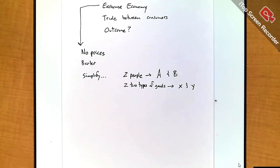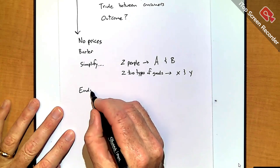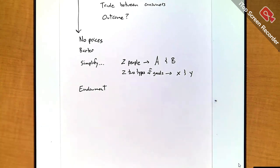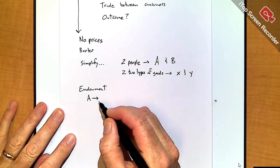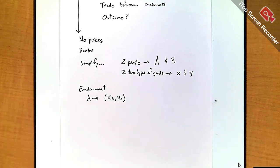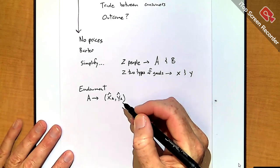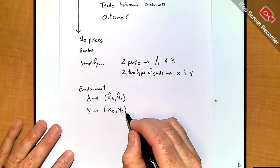It turns out you can go a long ways just with that. We're going to take each consumer and assume there's some sort of endowment in the economy. Since I don't have any production, I just want A and B to each start with a certain amount of X and Y. So A has a basket of goods like x-sub-A and y-sub-A, and B also has a basket — x-sub-B and y-sub-B.